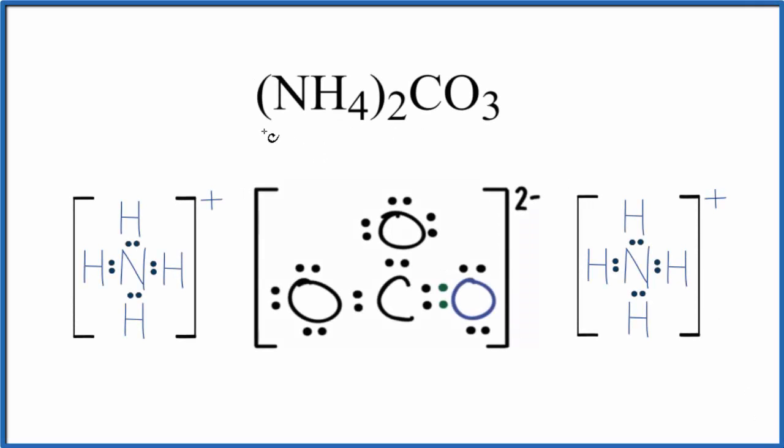In this video we'll write the Lewis structure for ammonium carbonate. To start out, you need to realize that we have NH4 here. This is the ammonium ion and the whole thing has a 1 plus ionic charge. We have two of them.